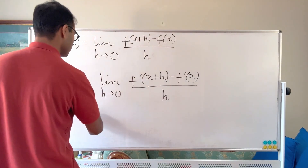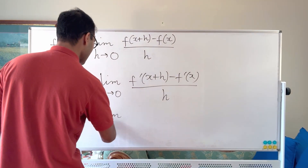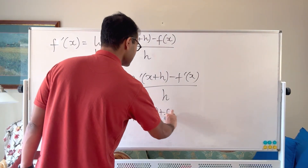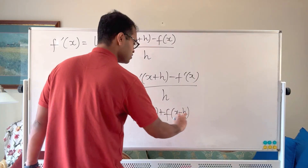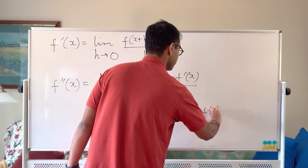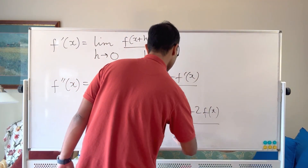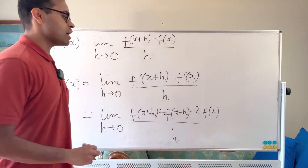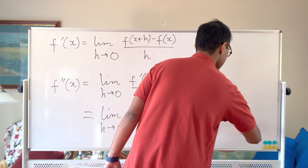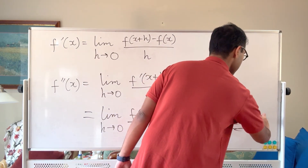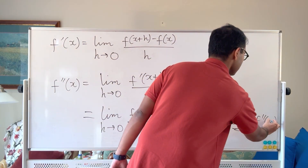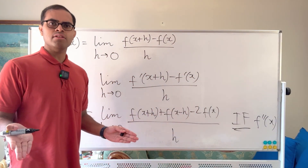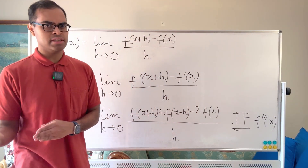The formula is the following: it is the limit as h goes to zero of f of x plus h plus f of x minus h minus 2 times f of x, divided by h squared. That is going to be the value of the second derivative of f at x if f double prime of x exists. And I think that's really cool because you can directly find the second derivative without finding the first derivative first.